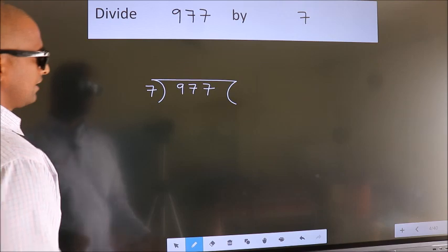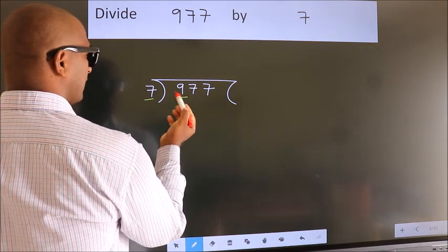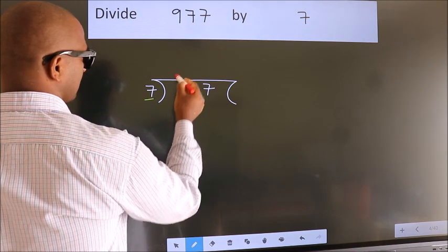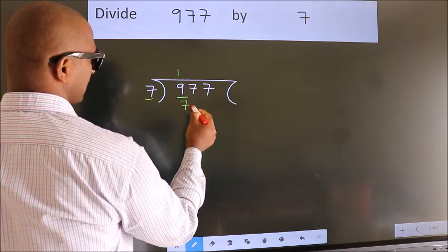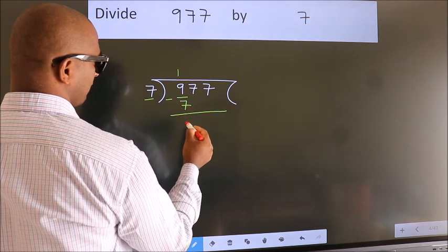Next, here we have 9. Here 7. A number close to 9 in the 7 table is 7 ones, which is 7. Now we should subtract. We get 2.